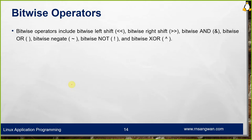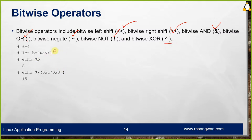Bitwise operators are also available in bash: bitwise left shift, right shift, bitwise AND, bitwise OR (vertical bar), bitwise NOT (negate), and exclusive OR. As an example: a=4, left shift gives 8. For bitwise XOR between hexadecimal C and hexadecimal 3, convert to binary and XOR, then convert back to decimal — the answer is 15.